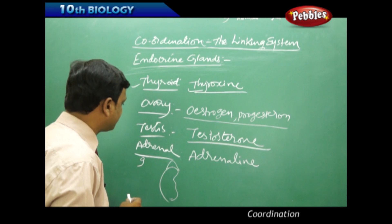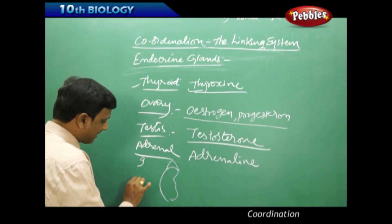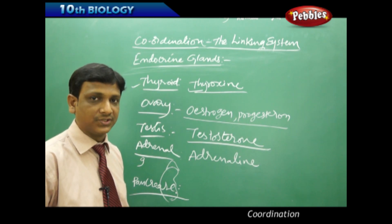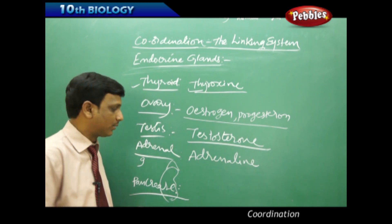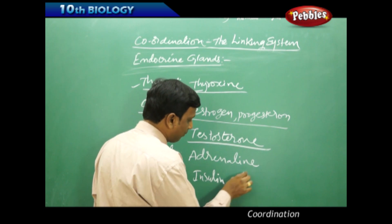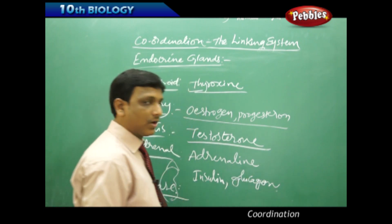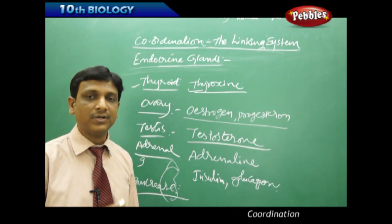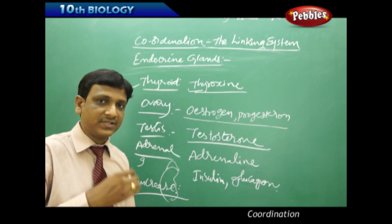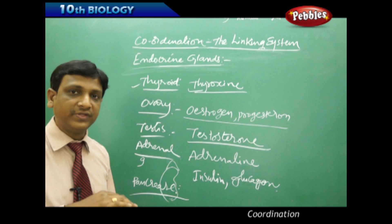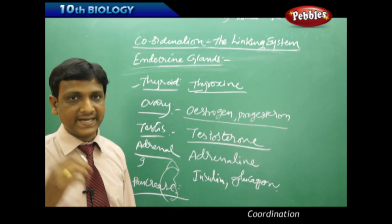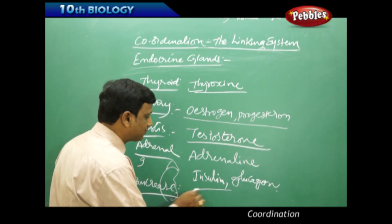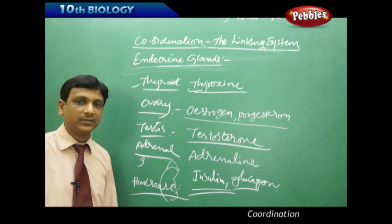The pancreas is also an endocrine gland. Although it is a digestive organ that secretes pancreatic juice, the islets of the pancreas are endocrine in nature and secrete the hormones insulin and glucagon. These two hormones help in regulating blood sugar: insulin converts excess glucose in the blood to glycogen, and glucagon converts glycogen back to glucose. Together they maintain blood glucose at a normal value of 100 to 110 mg per dL.